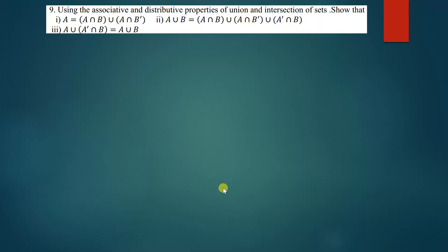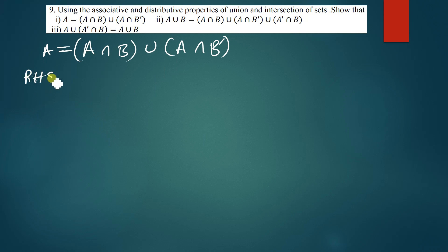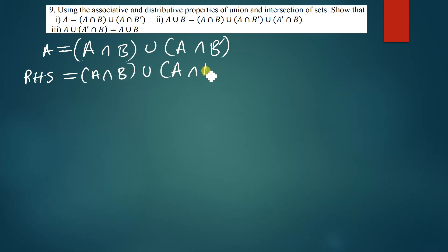Let's look at the first question. We have to prove that A is equal to (A intersection B) union (A intersection B complement). I'll take the right-hand side, which is (A∩B) ∪ (A∩B').